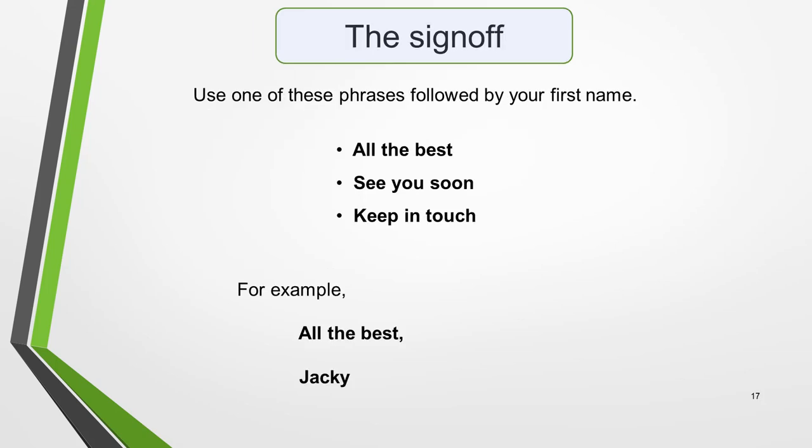You must sign off your letter correctly. Use one of these phrases followed by your first name: 'All the best', 'See you soon', 'Keep in touch' — for example, 'All the best, Jackie.' Never add your surname when writing to a friend.